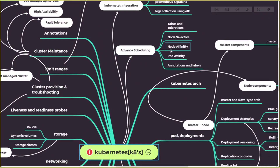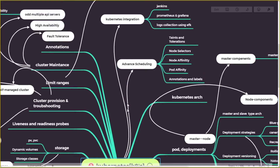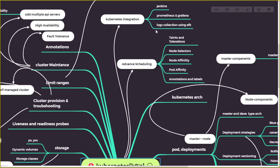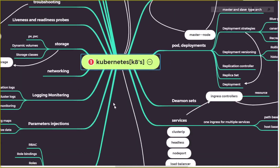Advanced scheduling topics include taints and tolerations, node selectors, node affinity, pod affinity, annotations, and labels. These allow you to schedule a particular pod to run only on a specific node. Finally, we'll cover Kubernetes integrations — integrating Jenkins, Prometheus and Grafana for monitoring, and EFK for log collection.